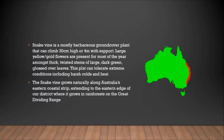Snake Vine is mostly a herbaceous ground cover plant that can climb 30 centimetres high or 4 metres with support. Large yellow and gold flowers are present for most of the year amongst thick, twisted stems of large, dark green, glossed-over leaves.